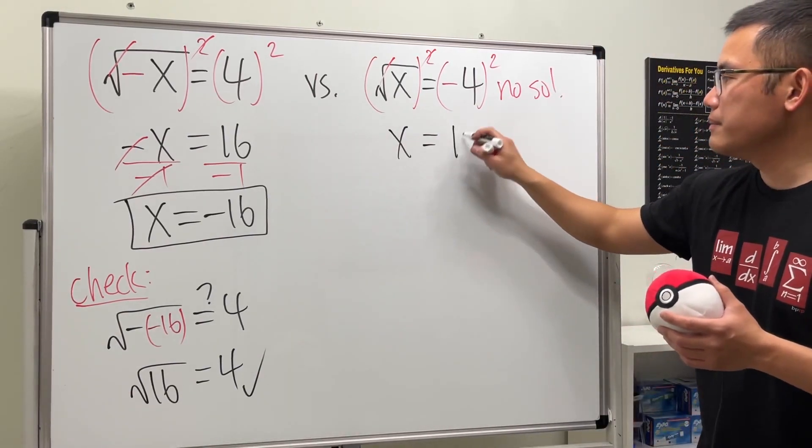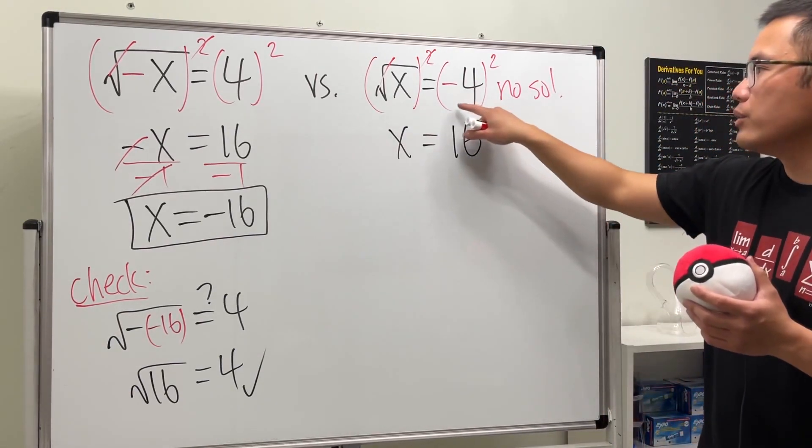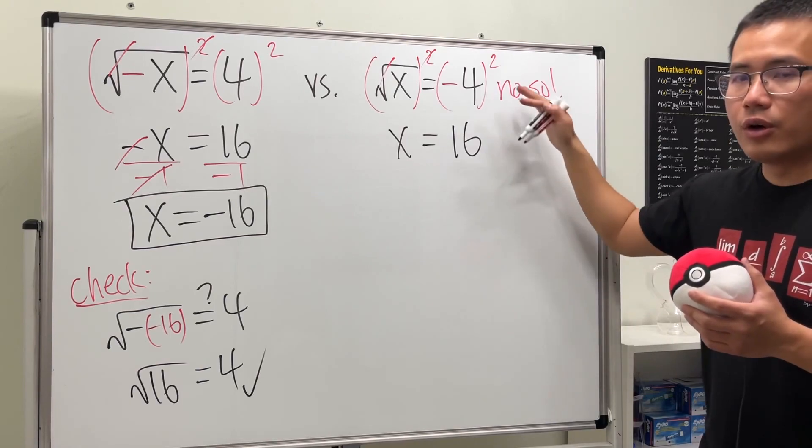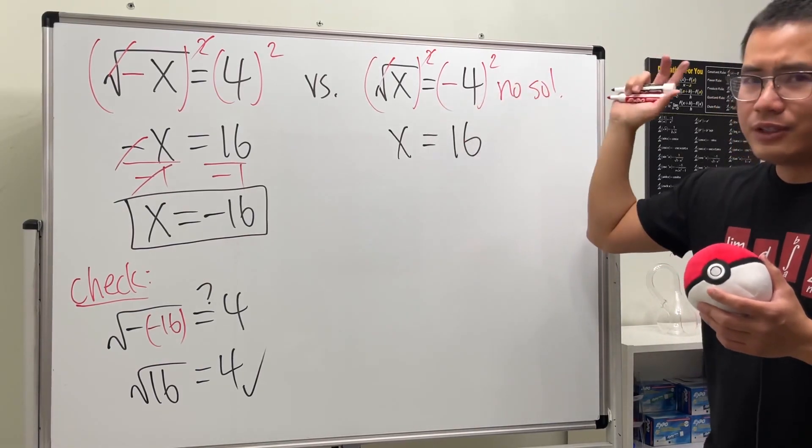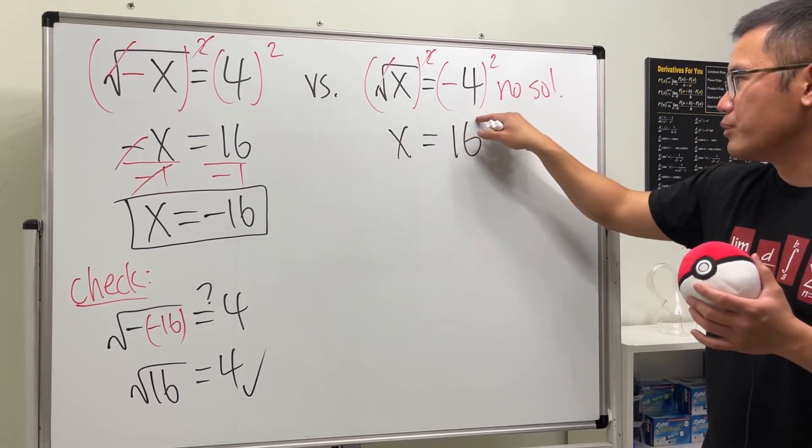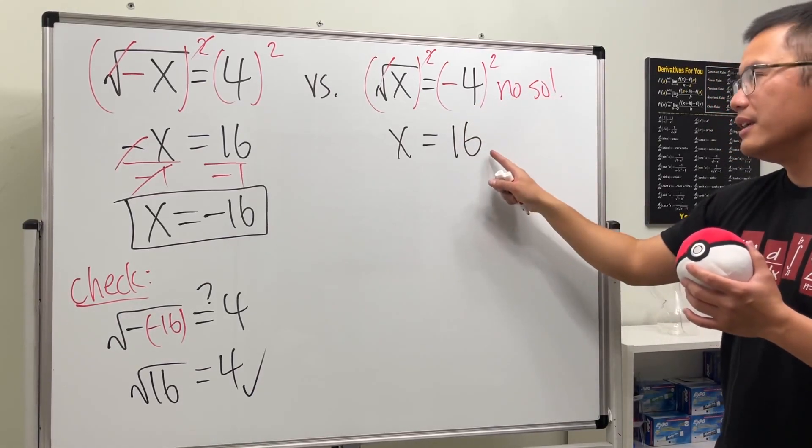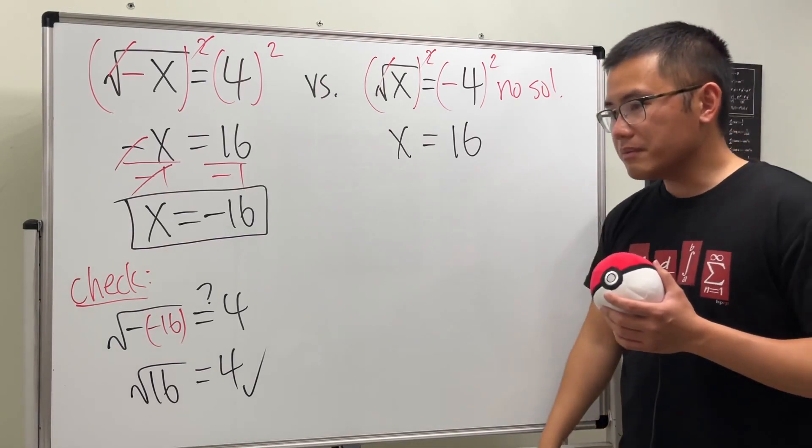If you want to know more about this I have another video in terms of does the square, does the parentheses matter, so go ahead and check that out. I explained that in much more detail over there. So check that out. The answer is 16 here, is it?